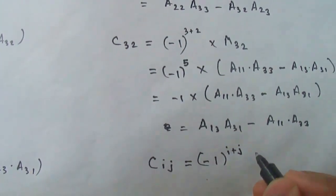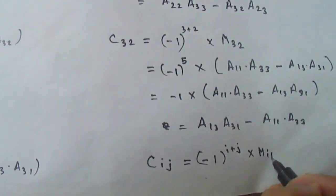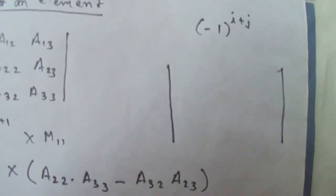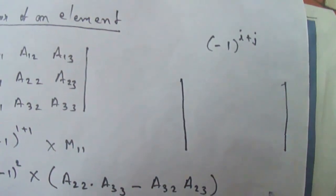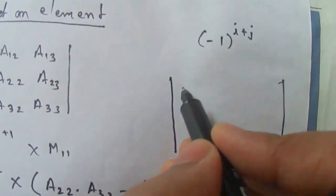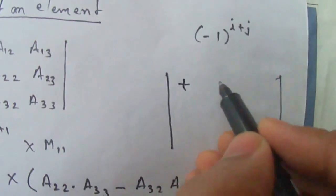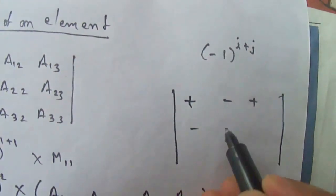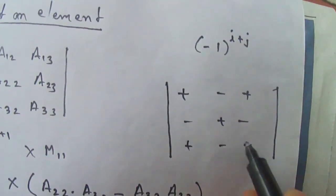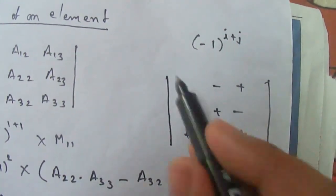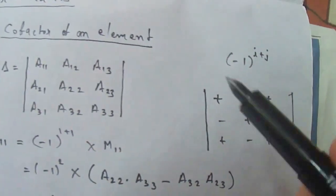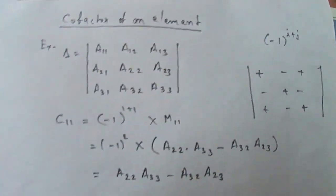To calculate the cofactor of any element in a determinant, you only need to find its minor. For the sign, you can use the pattern: + − + / − + − / + − +. Just apply this sign to the minor and that gives you the cofactor of the element.